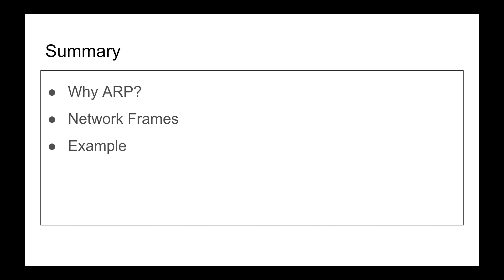Summary: we learned why we need ARP — everything in the network is sent through MAC addresses, but we know IP addresses and not MAC addresses, so we need something to translate IP to MAC, and that's ARP. We also talked about network frames and walked through an example. Hope you enjoyed this video — we'll talk about ARP poisoning in another video.